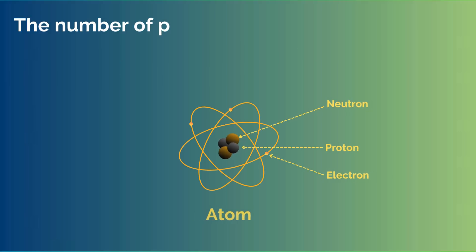The number of protons present in the atom of an element determines the atomic number of that element.